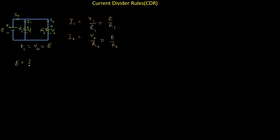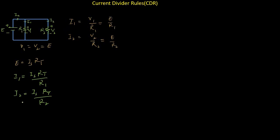The current divider rule is based on the fact that the input voltage E equals Is times Rt, where Is is the total current from the DC voltage source and Rt is the equivalent resistance of the parallel circuit. Substituting E into the Ohm's Law equations, we get I1 equals Is times Rt divided by R1, and I2 equals Is times Rt divided by R2. For n number of resistors connected in parallel, the formula for the nth resistor is: I_nth equals Is times Rt divided by R_nth.